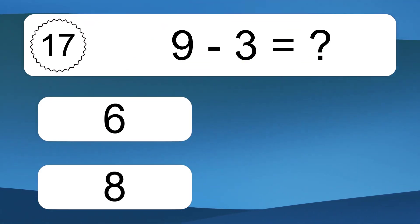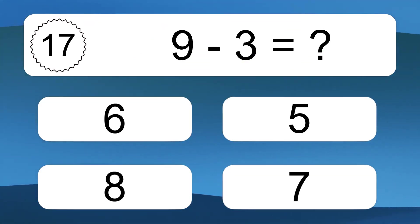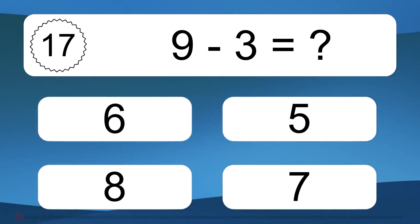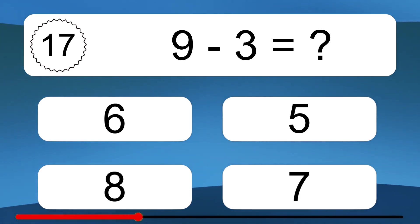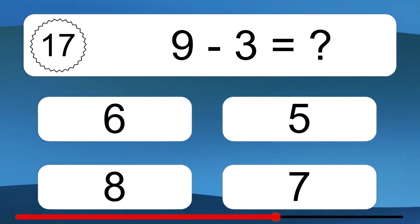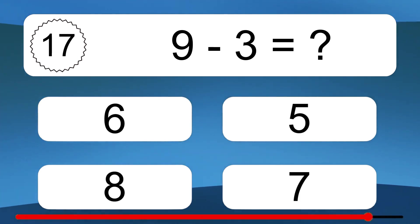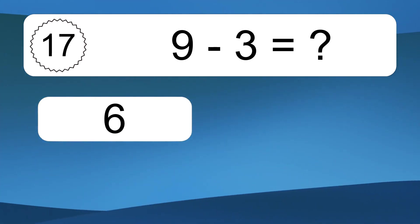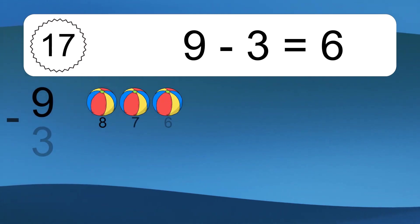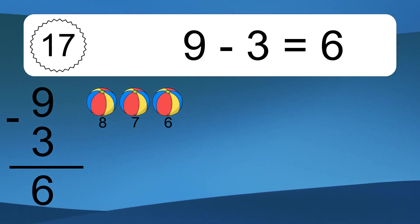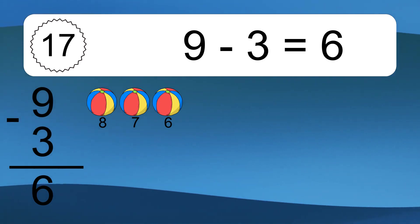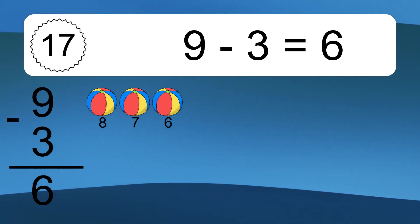9 minus 3 equals what? 9 minus 3 equals 6. Let's count it: 8, 7, 6.